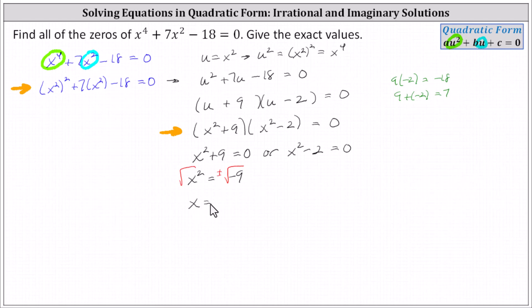Simplifying, we have x equals plus or minus. We can write the square root of negative nine as the square root of nine times negative one. Recall the square root of nine is equal to three, and the square root of negative one is equal to i, the imaginary unit, giving us x equals plus or minus three i.